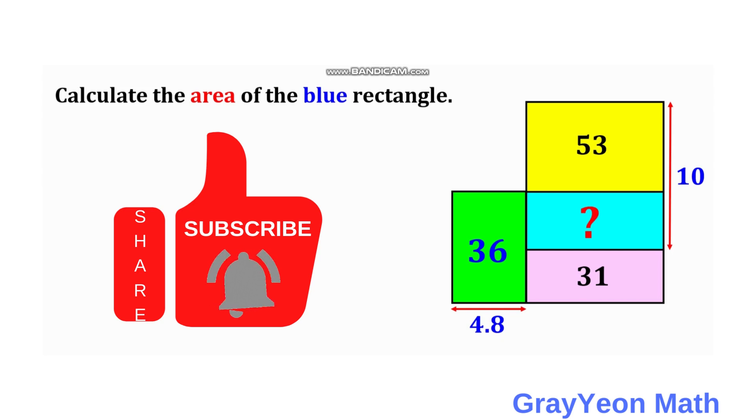Green, yellow, blue which is the unknown and a lavender rectangle. The green rectangle is 36 square units. The yellow is 53 and the lavender is 31 while the blue rectangle is unknown.